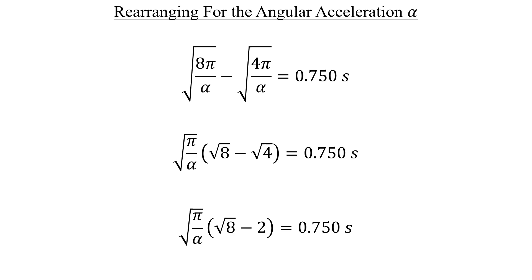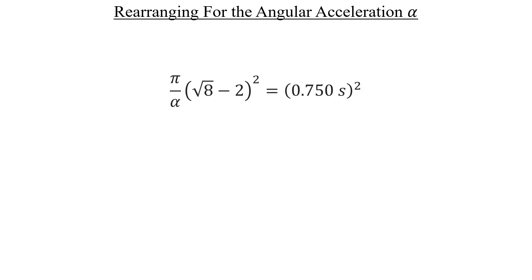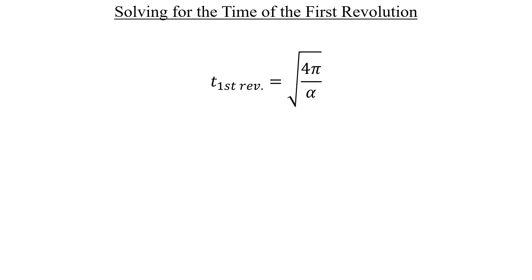So now, let's square both sides, and then multiply both sides by alpha, and divide both sides by the square of 0.750 seconds. And now we have an expression for the angular acceleration, and we can plug that into the time it takes for the first revolution to occur, which is this expression. And when we do that, the result isn't super pretty. So let's simplify it a little bit to make it easier to enter into the calculator.